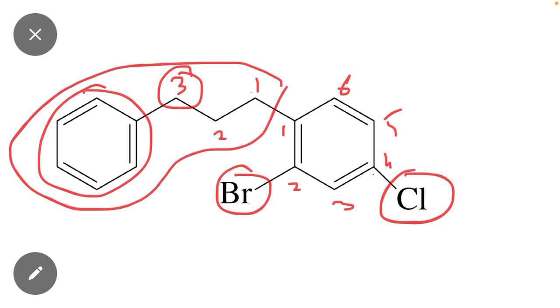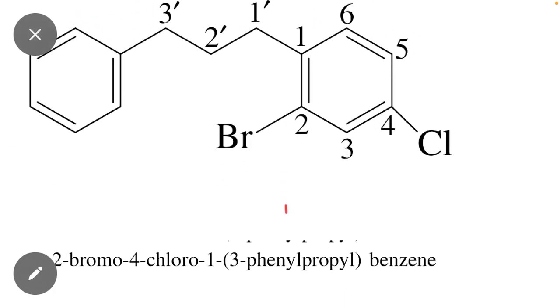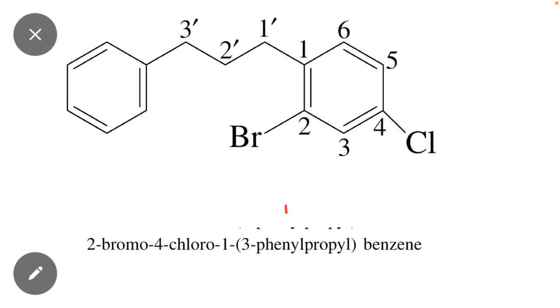Now we will write the IUPAC name of this compound. Here you can see that after numbering, bromo is present at position number 2, 2-bromo, and chloro is present at position number 4, 4-chloro.